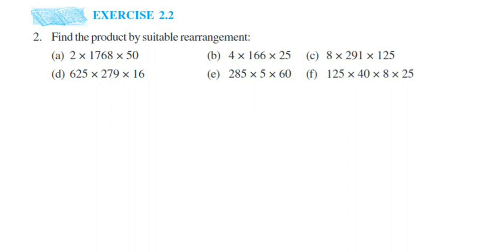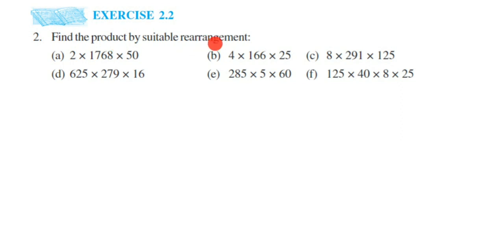Hey everyone, here's a question from Exercise 2.2, second question. The chapter is Whole Numbers. The question is: find the product by suitable rearrangement. So we have to find the product — product means we have to multiply the numbers. But we don't have to multiply them directly; we have to arrange them in a way that makes the multiplication easy.